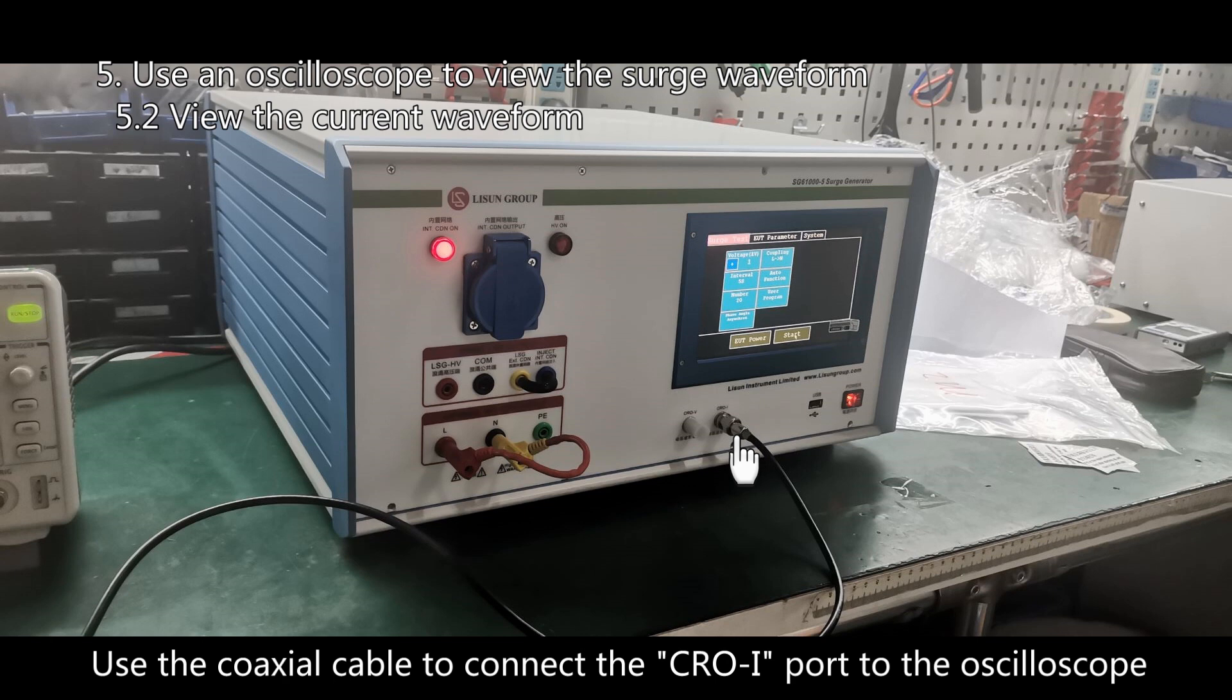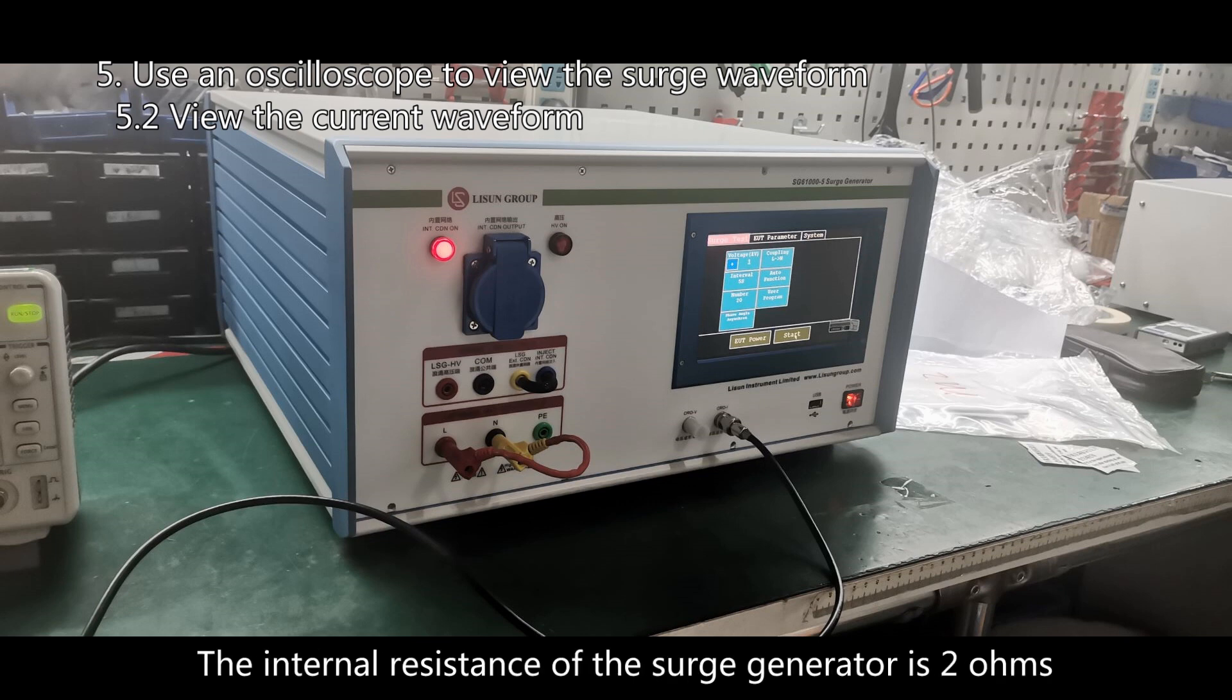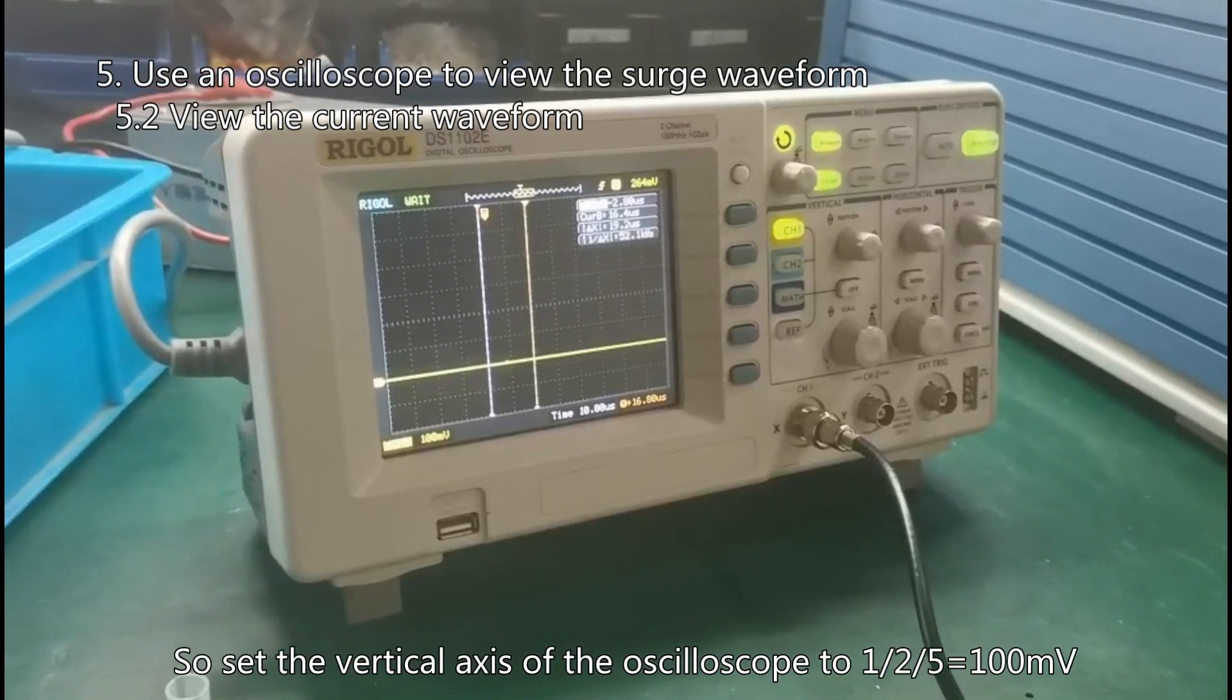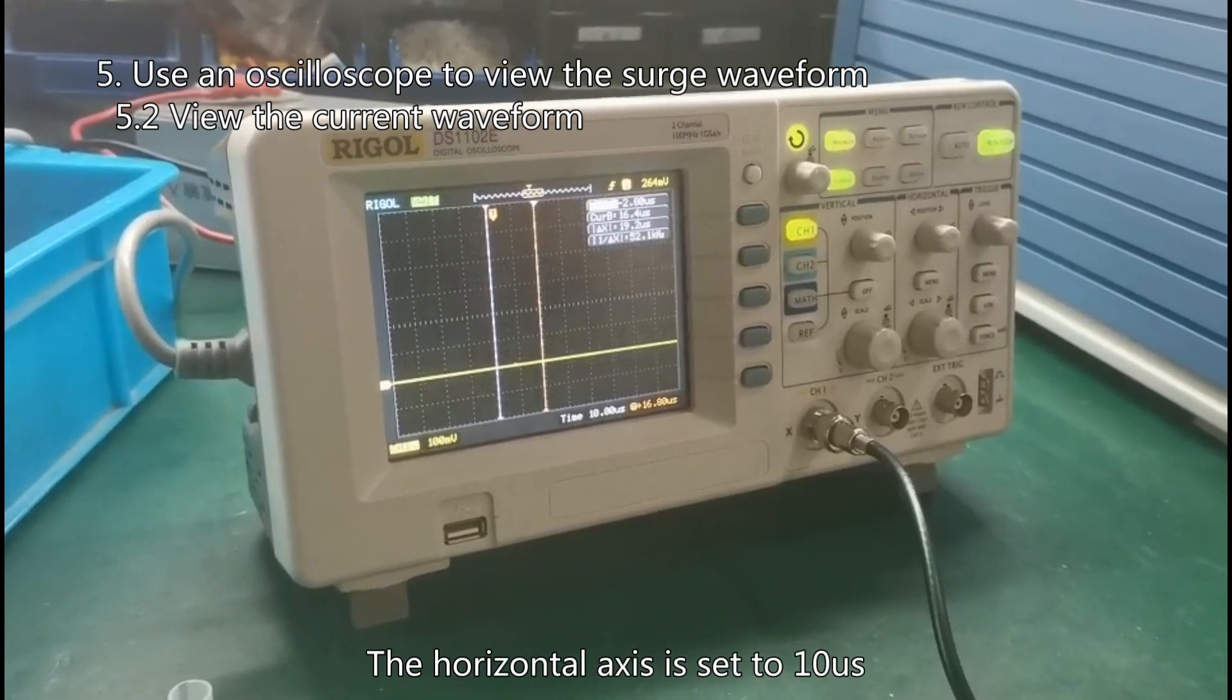Use the coaxial cable to connect the CROI port to the oscilloscope. There is also a built-in 1 to 1,000 high voltage probe. The internal resistance of the surge generator is 2 ohms, so set the vertical axis of the oscilloscope to 100 millivolt. The horizontal axis is set to 10 microseconds.